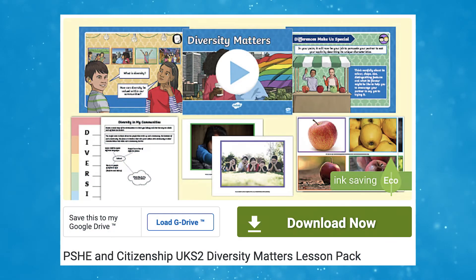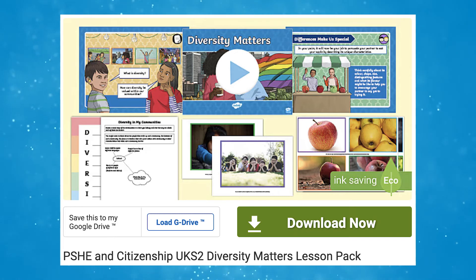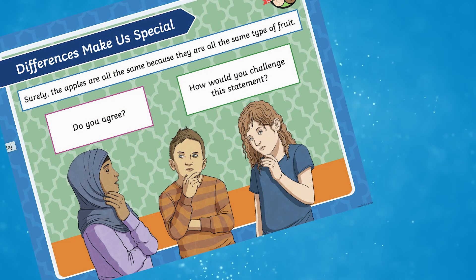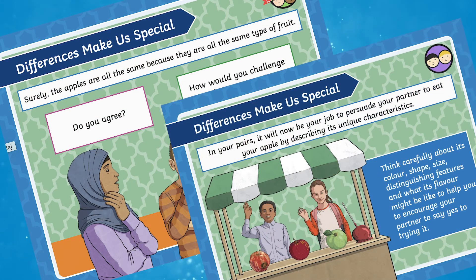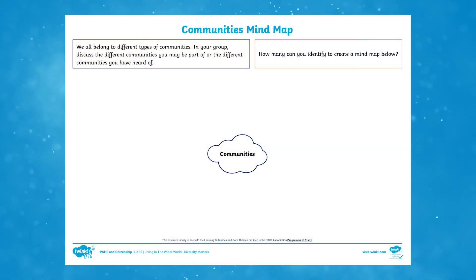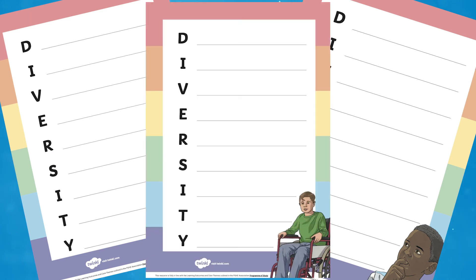If you are teaching Upper Key Stage 2, why not check out our PSHE and Citizenship Diversity Matters lesson pack? This particular lesson focuses on children being kind and supportive members of their community by embracing diversity. It contains photo cards, a community mind map worksheet and an acrostic poem worksheet.